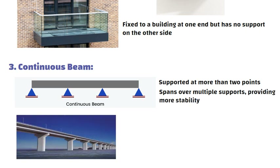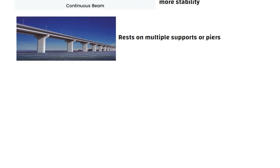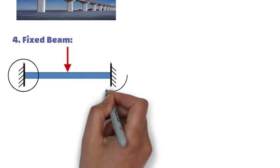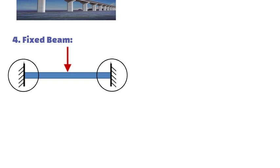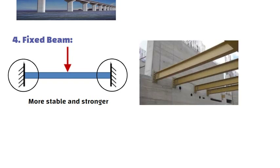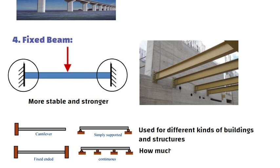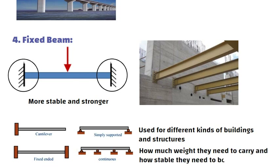3. Continuous Beam: Example: a bridge that rests on multiple supports or piers. 4. Fixed Beam: Both ends of the beam are fixed and cannot rotate. This makes it more stable and stronger. Example: a beam fixed in place that cannot move at the ends. Each type of beam is used for different kinds of buildings and structures, depending on how much weight they need to carry and how stable they need to be.